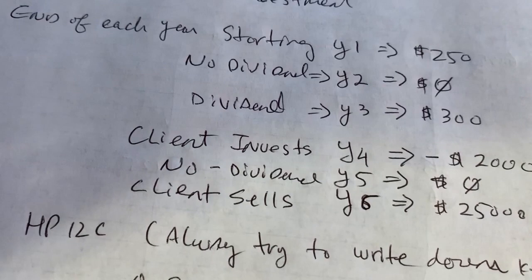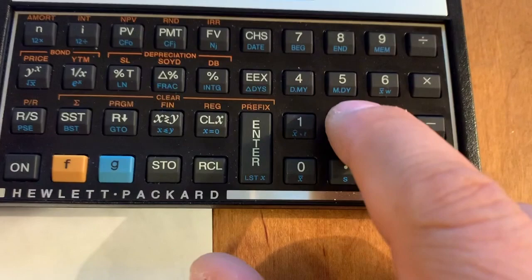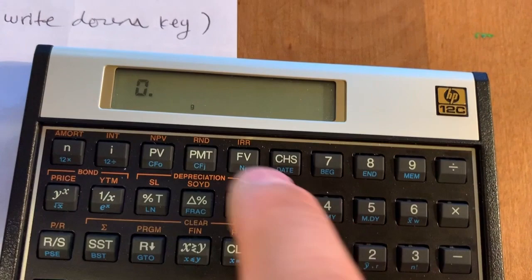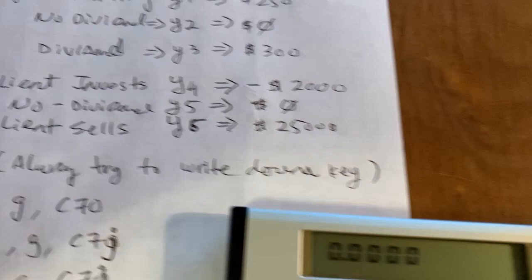So fourth year, you're investing $2,000 more into it. So you're going to do $2,000, change sign, CFJ. Year five, zero, CFJ. And year six, you sell it for $25,000, CFJ.